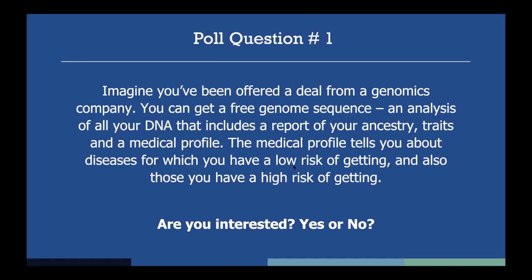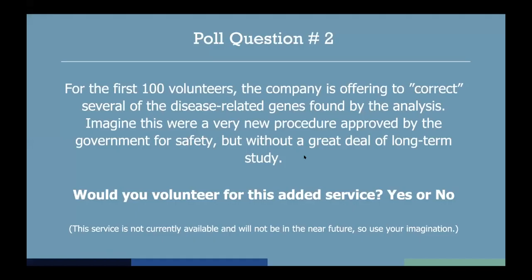We're going to go to the next poll question, which builds off of poll question number one. Poll question number two says: for the first 100 volunteers, the company is offering to correct several of the disease-related genes found by the analysis. Imagine this were a very new procedure approved by the government for safety, but without a great deal of long-term study — kind of like what we're going through right now with COVID, where we can maybe cure or prevent it, but it's a very new procedure. Go ahead and enter your thoughts for this poll question.